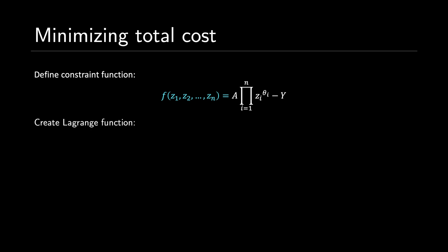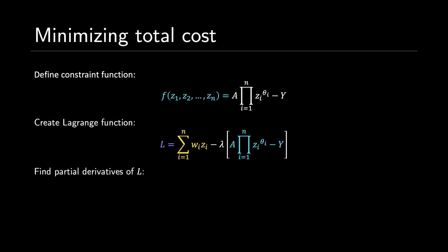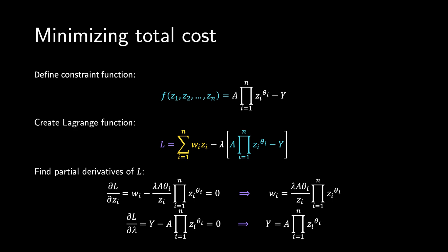Next we create a Lagrange function L, defined as L equals the sum from i equals 1 to n of w sub i times z sub i, minus lambda times A times the product from i equals 1 to n of z sub i to the power of theta sub i. We take partial derivatives of L with respect to every z sub i term and with respect to lambda. The partial of L with respect to z sub i equals w sub i minus lambda times A over z sub i times the product from i equals 1 to n of z sub i to the power of theta sub i, which we set equal to zero, giving us w sub i equals that expression. The partial of L with respect to lambda gives y minus A times the product from i equals 1 to n of z sub i to the power of theta sub i, also set equal to zero, yielding y equals A times the product of z sub i to the theta sub i.